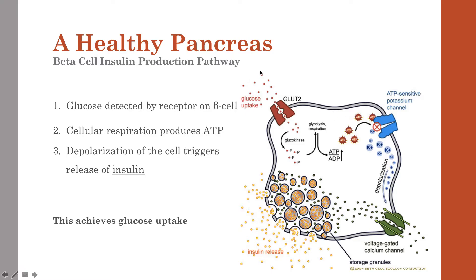First, we see that glucose is detected in the blood by the GLUT2 transporter. It detects the glucose and makes a conformational change, which allows the glucose to be released inside the cellular matrix. A glucokinase then phosphorylates the glucose molecule, and it goes under glycolysis, the Krebs cycle, or the production pathway towards ATP.